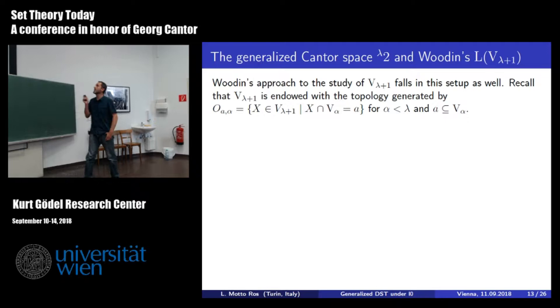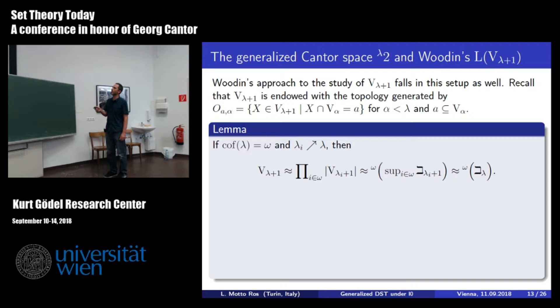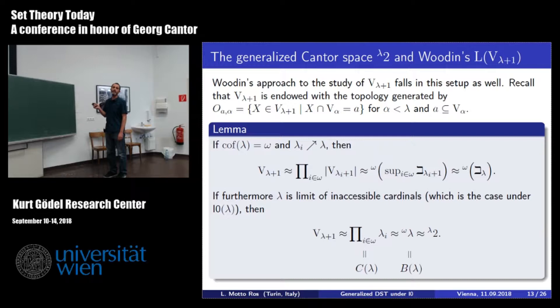This applies also to Woodin's setup. If you take Woodin's setup with I0, Woodin's space with his topology is homeomorphic to 2^lambda. And if lambda is a limit of inaccessible cardinals—which is the case if you have I0 at lambda—then Woodin's space is exactly the same as Stone's C_lambda, exactly the same as V_lambda plus 1's topology, exactly the same as 2^lambda. So in this setup, Stone, generalized descriptive set theory, and Woodin's I0 are all about the very same space—there should be some connection, since it's the same object.